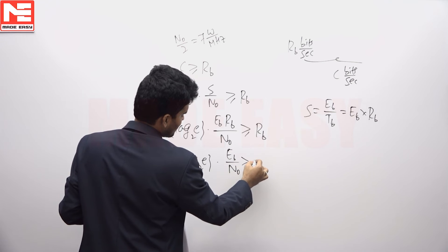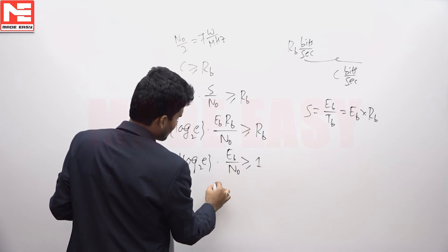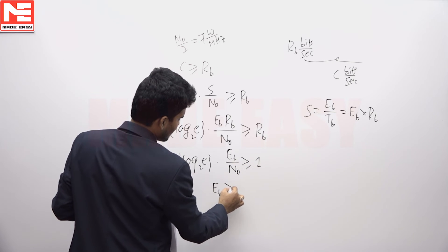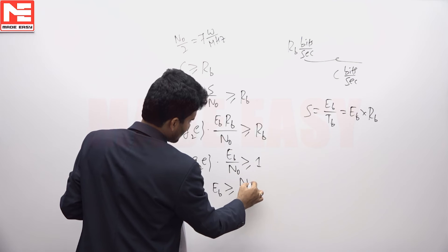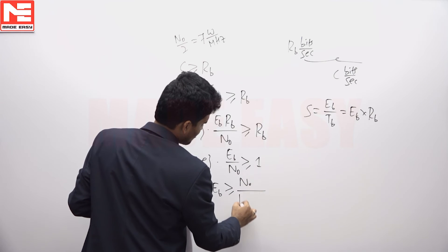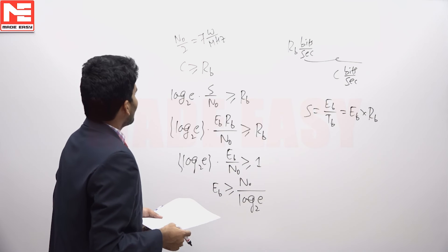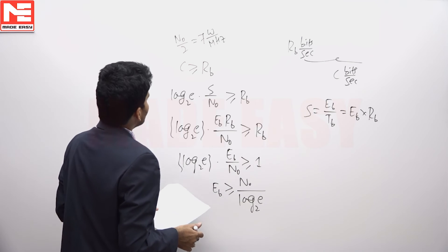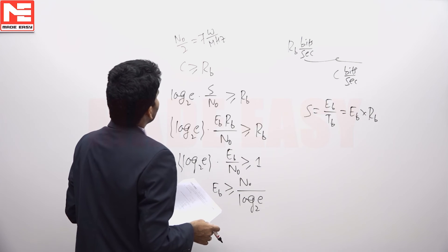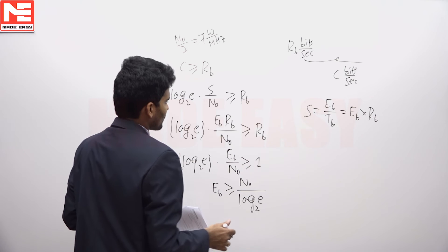So here log E base 2 of EB by N0 is greater than or equal to 1. So EB is greater than or equal to N0 by log E base 2.